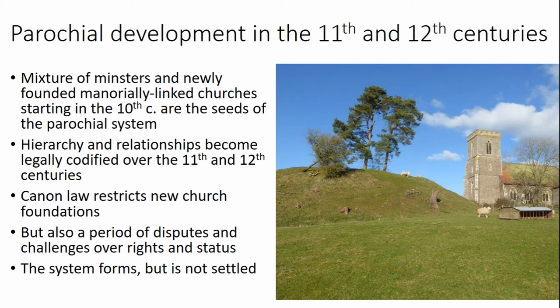This mixture of old minsters and new local churches became the seeds of the later medieval parochial system. But in documentary evidence, it's really the 11th and 12th centuries when those churches began to settle into something like a formalized hierarchy — about which churches are subsidiary to others, who can perform sacraments, and who owes dues to whom. The steady increase in the number of local churches really slows down by the end of the 12th century when canon law plays an important role in stopping new church foundations, but disputes between churches over rights and status begin appearing in this period as well.